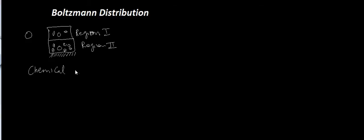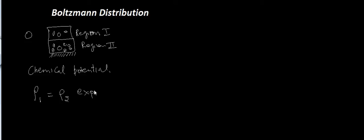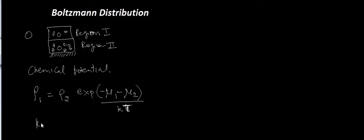The chemical potential is the interaction of a molecule with the surrounding medium — in this case, the interaction of the molecule with the surface. The Boltzmann distribution is defined as: rho1 equals rho2 times exponential of (mu1 minus mu2) divided by kT, where k is the Boltzmann constant and T is the temperature.